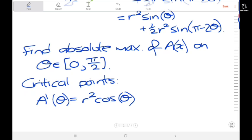And sine again differentiates to cosine, but we also have to differentiate the piece inside, which is pi minus 2 theta. So we bring out a negative 2, this cancels with the half, so we get negative r squared cosine of pi minus 2 theta. We find critical points by setting this equal to zero.